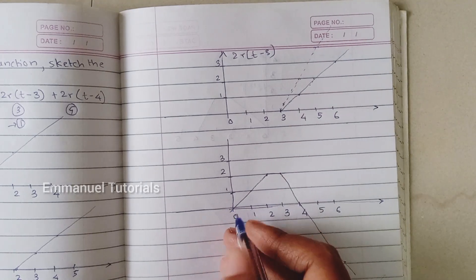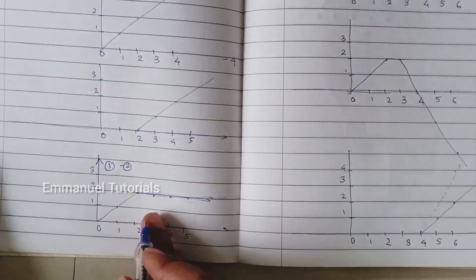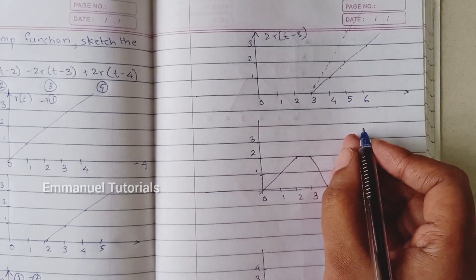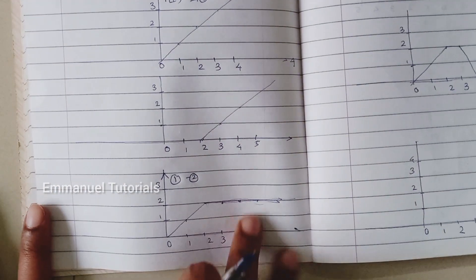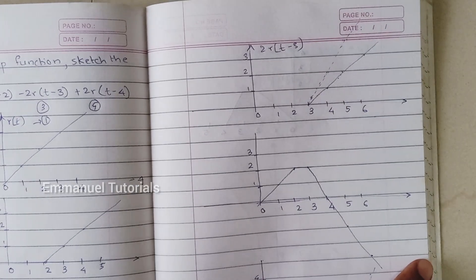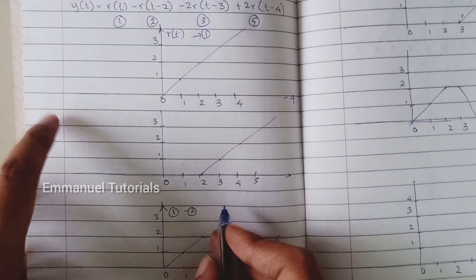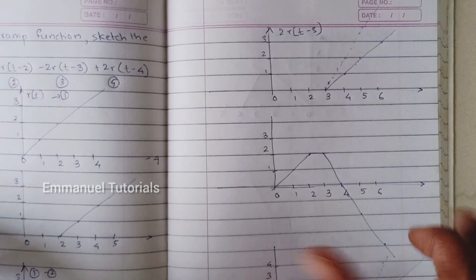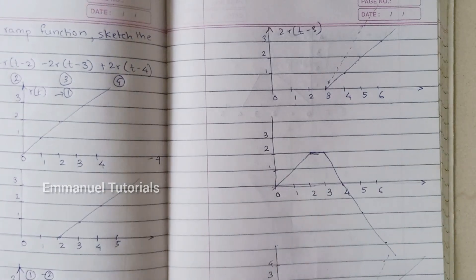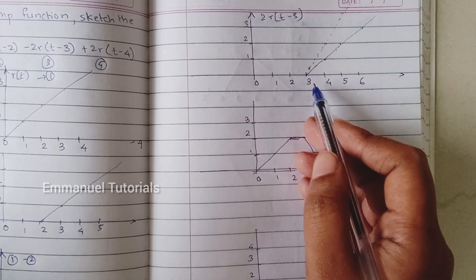Now we subtract this third signal from the resultant we already have, that is R(t)−R(t−2). The second signal starts from T=3 and the first signal starts at T=0. From 0 to 3, the second signal's amplitude is 0, so we can just draw the first signal shape as it is — a ramp increase then a constant step until T=3. At T=3, the first signal's amplitude is 2 and the second signal's amplitude is 0, giving 2−0=2.